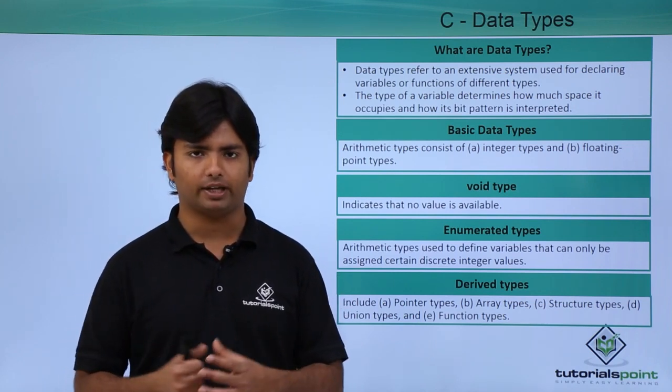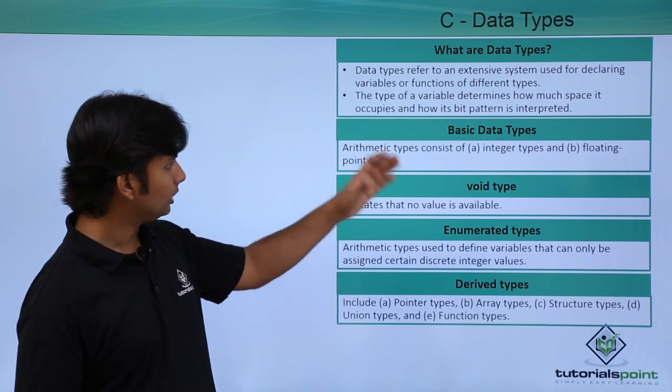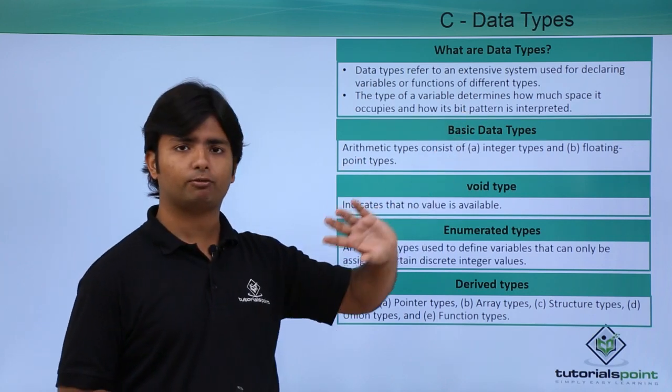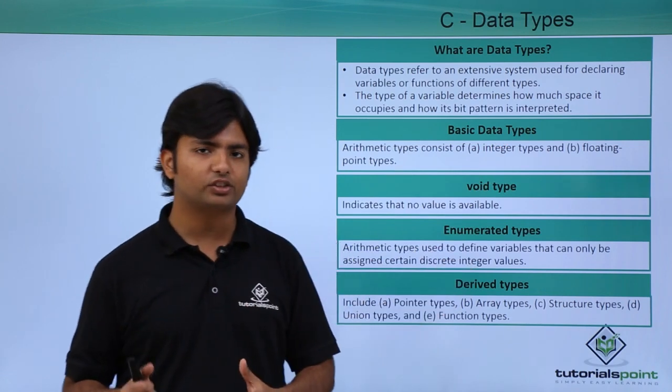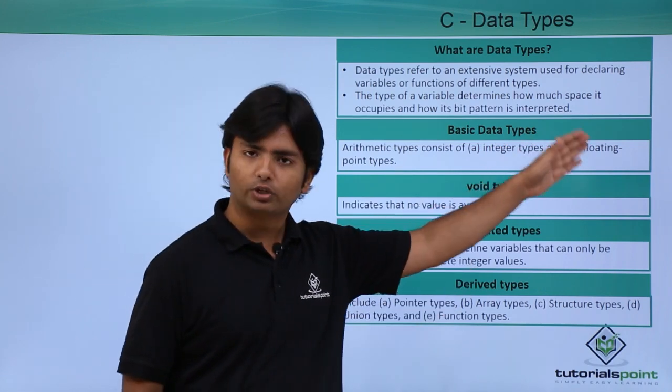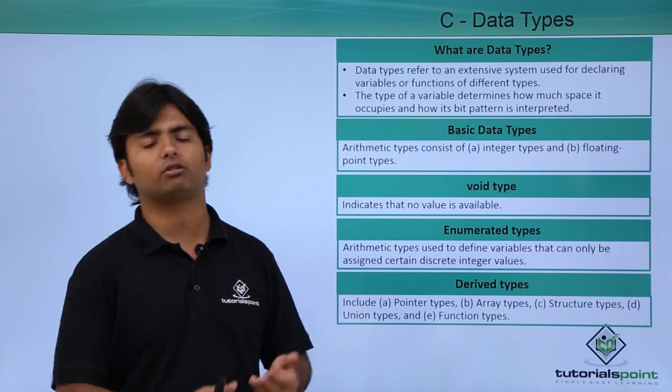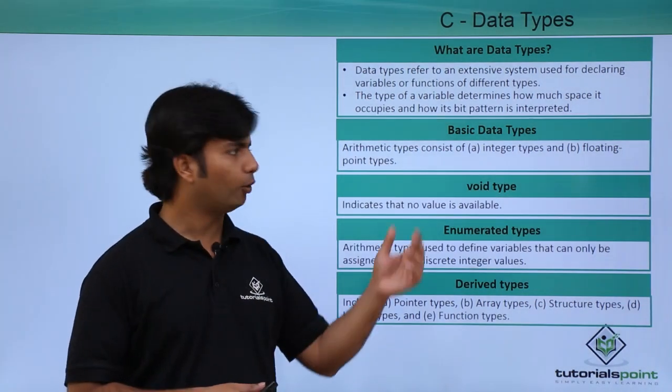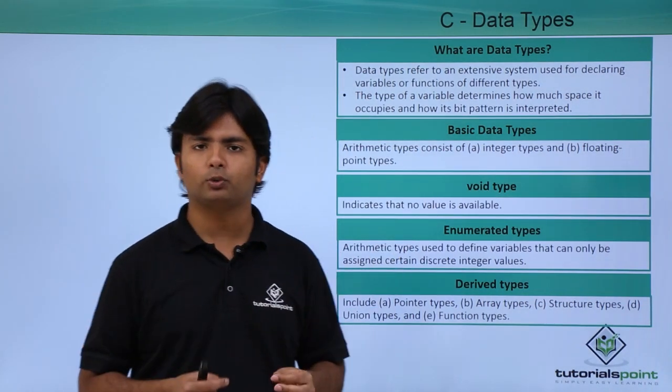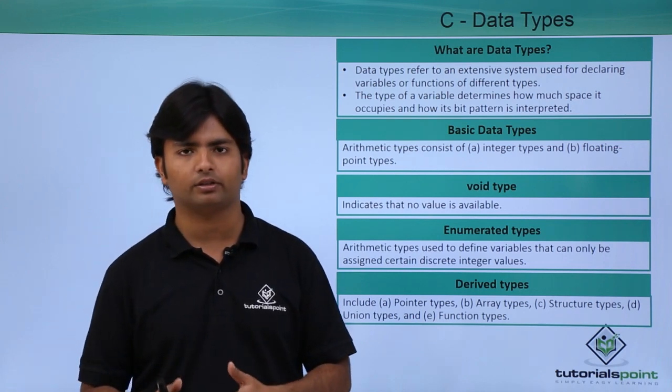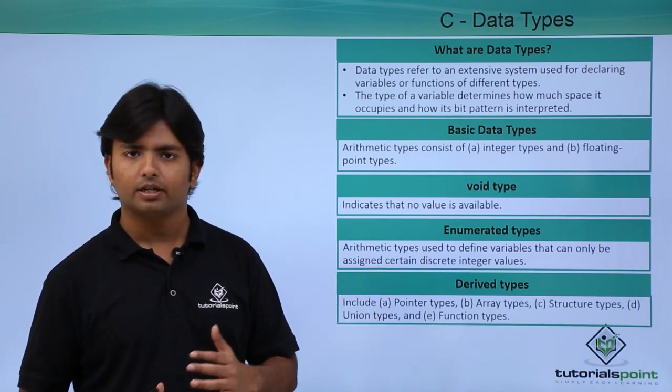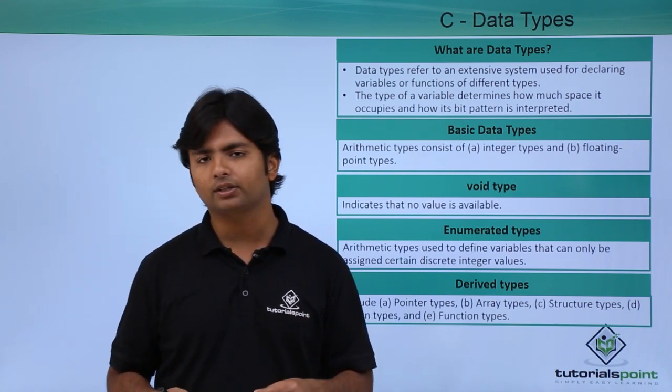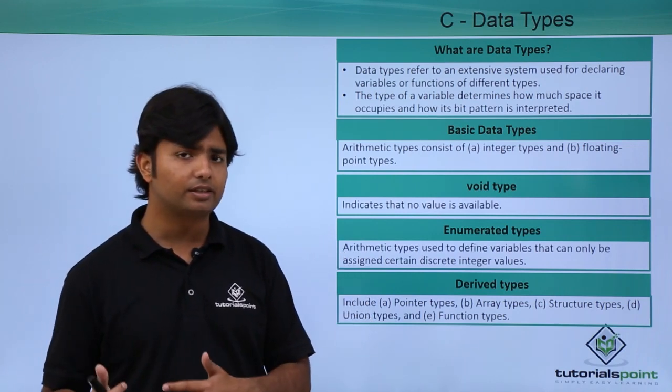Basically we have two data types: one is for integer values, meaning non-decimal numbers; the other is for floating numbers, meaning a number with a decimal value. Void is a data type used as a return type of a method. You will not define any variable of void type, but whenever you are defining a method which is not returning anything, we will use this void data type.